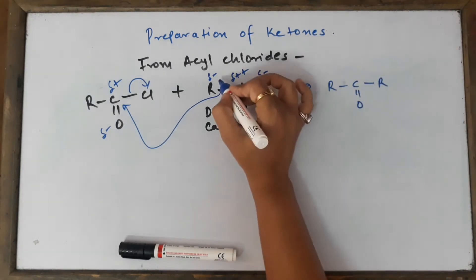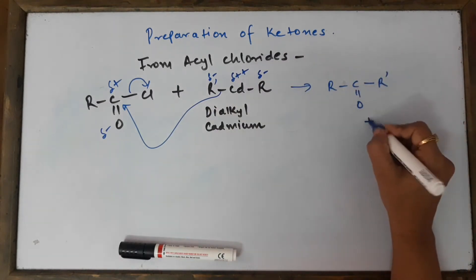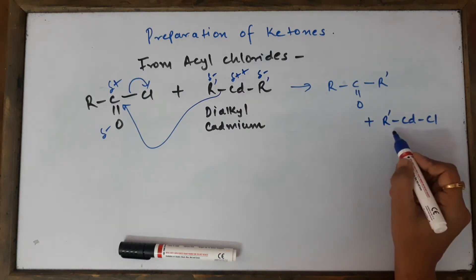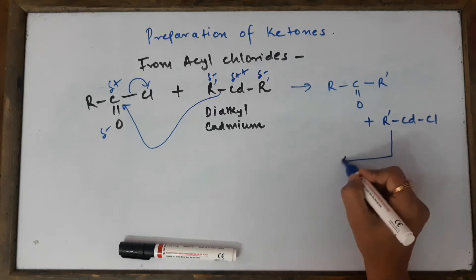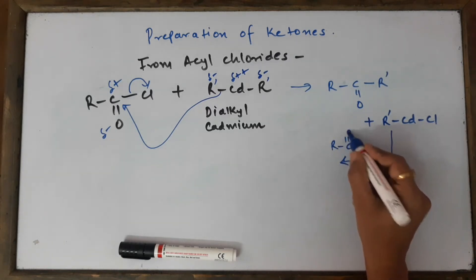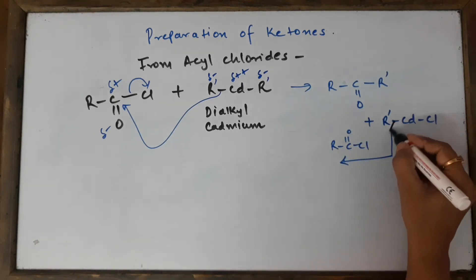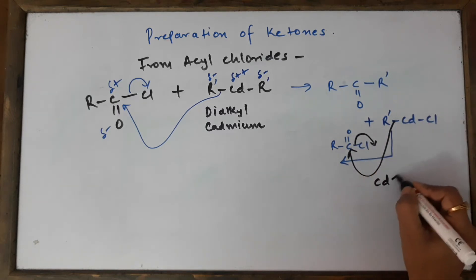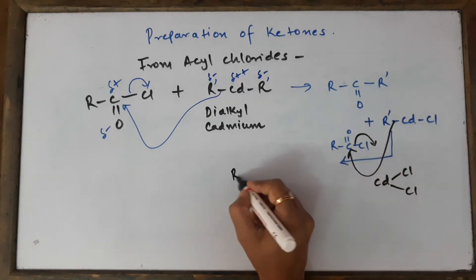We get R-CO-Cd-R' plus R'·Cd·Cl as one of the products. There is one more R still intact with the monoalkyl cadmium chloride, so it further attacks one more molecule of acyl chloride, R-CO-Cl. The same thing happens again — Cl goes out — and the byproduct is CdCl₂. What we get is R'.